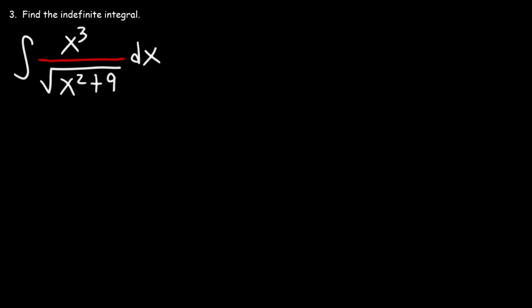Problem 3: find the indefinite integral. This is a trigonometric substitution problem. We need to make x equal to sine, tangent, or secant depending on the form. Because we have x squared plus 9, we use tangent, since 1 plus tan squared equals secant squared. If it were 9 minus x squared, we'd use sine; if x squared minus 9, we'd use secant. Because of the 9, we let x equal 3 tangent theta.